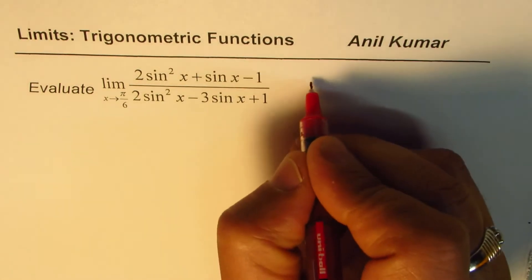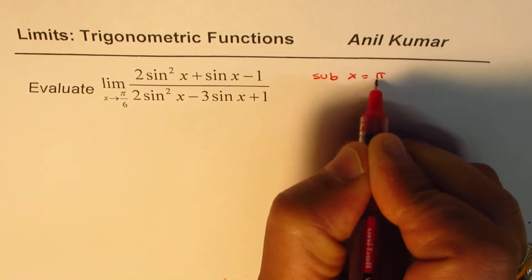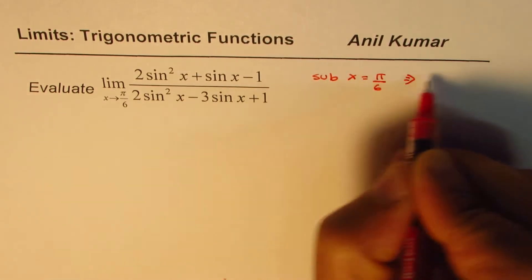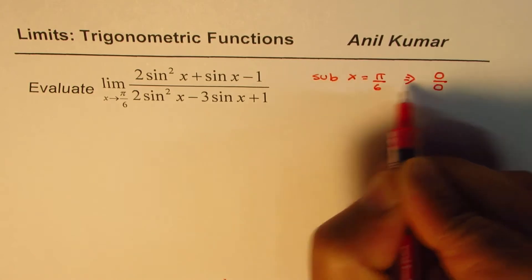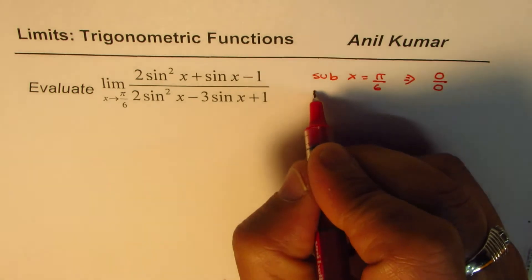Now if you substitute x equals π/6 in this equation you will get the value as 0 over 0, right? So you can do this calculation and check for yourself. So that is indeterminate form.